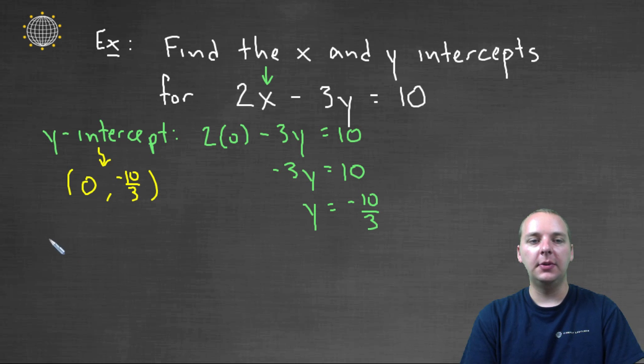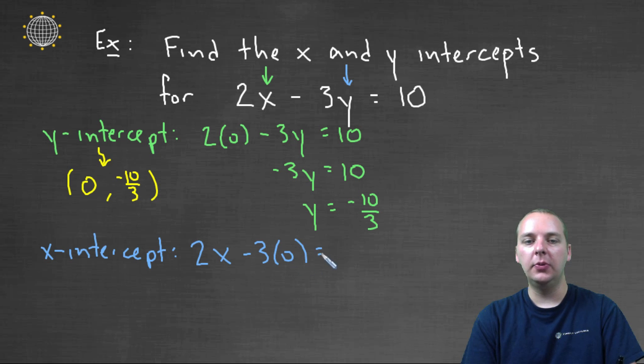Now the x-intercept, let's do that one next. Okay, for the x-intercept, we will set the y-coordinate equal to zero. So we'll have two x, minus three times zero, equals ten. And then we'll solve for x.